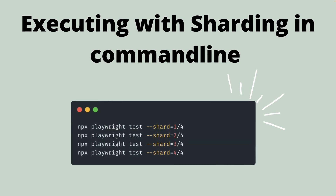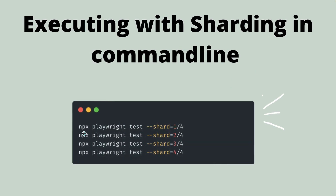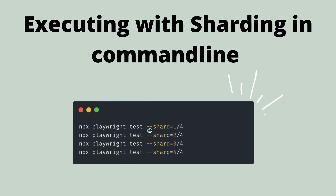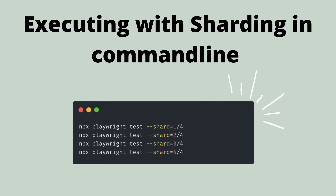You can see the same command — npx playwright test — but the only change here is that we give --shard=1/4. This means if you have four different scenarios, all these scenarios are going to run on four different machines instead of just running them on a single machine. That is the power of sharding.